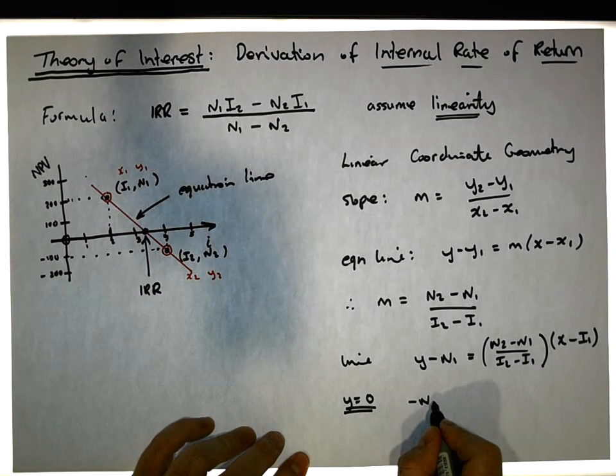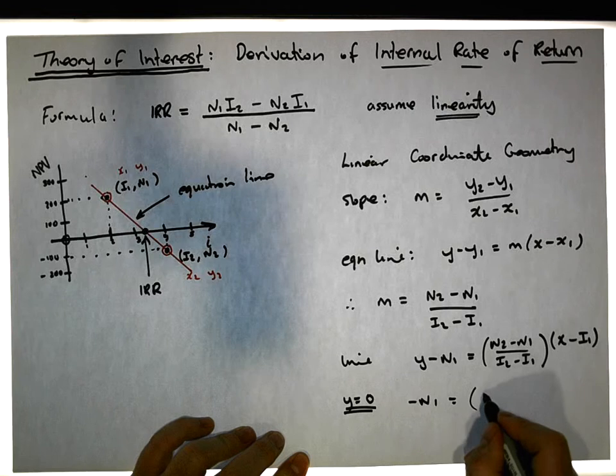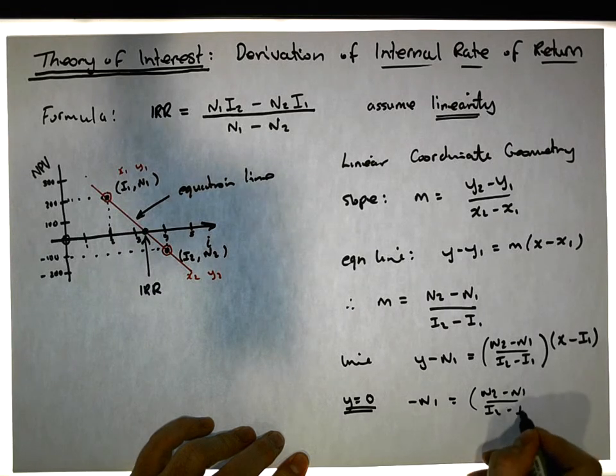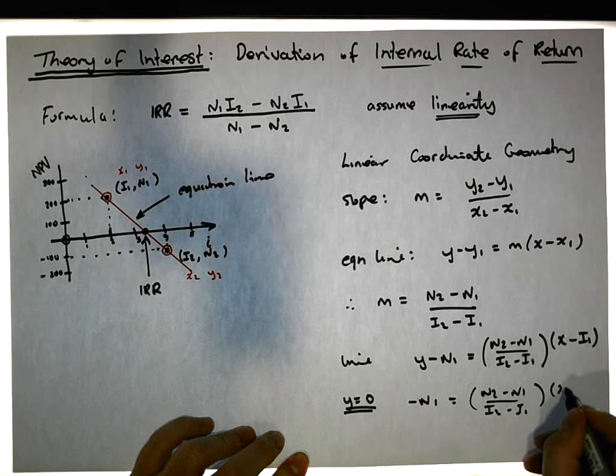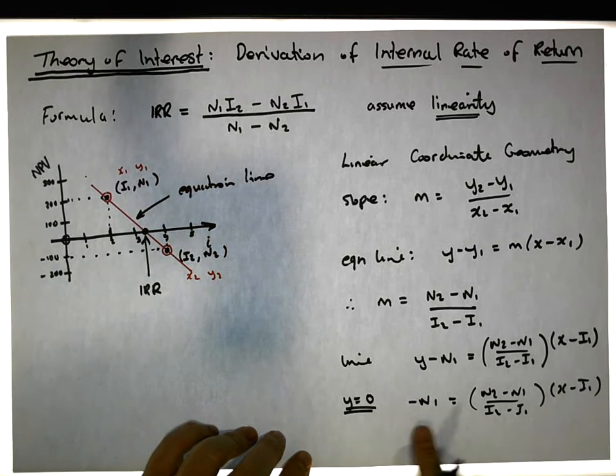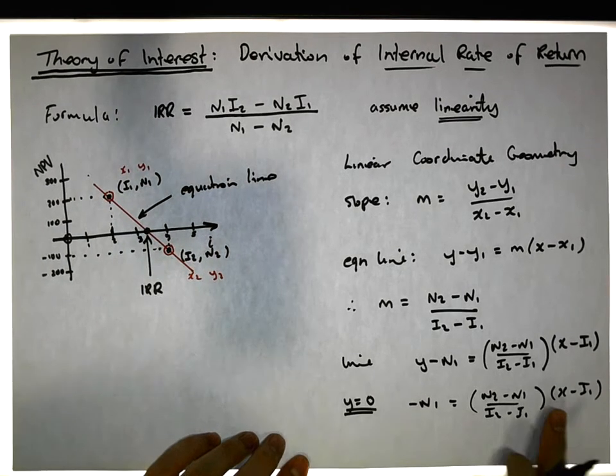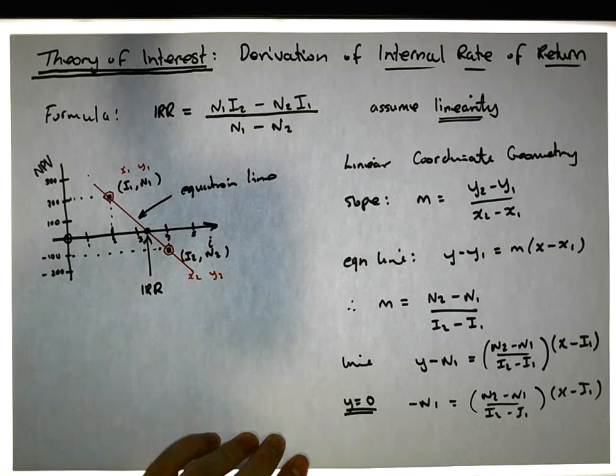Minus n1 is equal to this coefficient here, which is the m, n2 minus n1 over i2 minus i1, times x minus i1. And what we're going to do now is solve for x, because x is the value along this line when y is equal to zero.